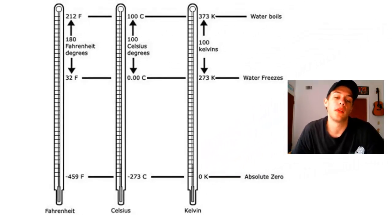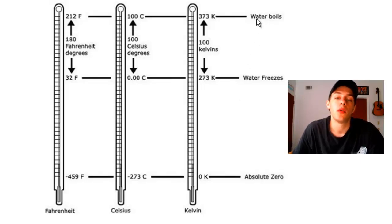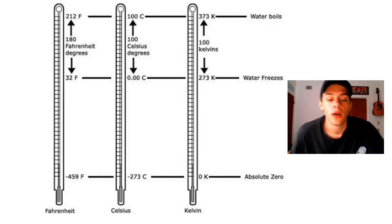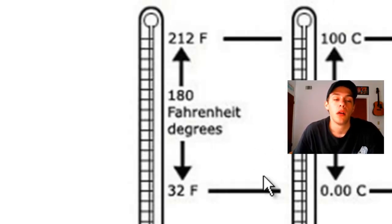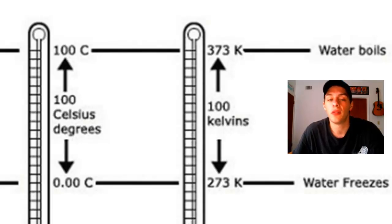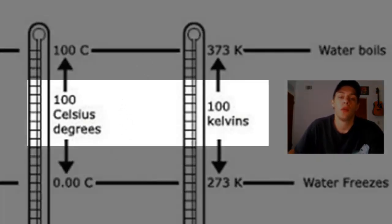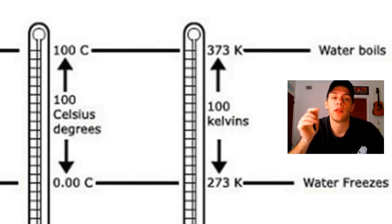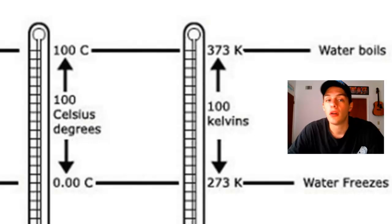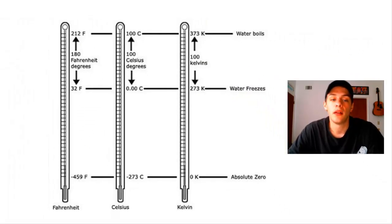On this diagram we have all three scales — Fahrenheit on the left, Celsius in the middle, and Kelvin on the right — with three important reference points highlighted: absolute zero, the freezing point of water at atmospheric pressure, and the boiling point of water at atmospheric pressure. Notice that the interval between freezing and boiling on the Fahrenheit scale is 180 degrees, whereas on both Celsius and Kelvin it's 100 degrees. This means one degree Celsius is exactly identical in size to one Kelvin; the two scales are simply shifted by a fixed number.